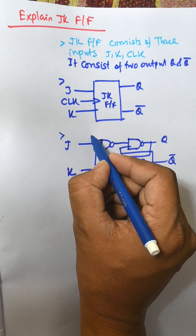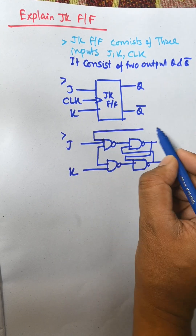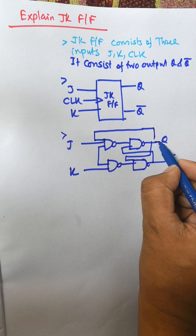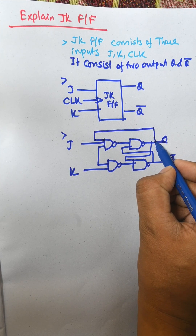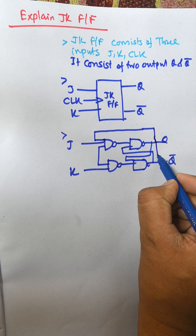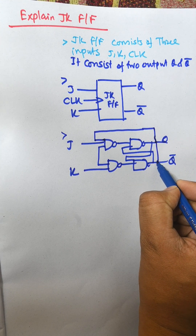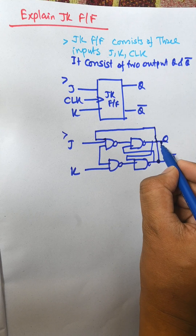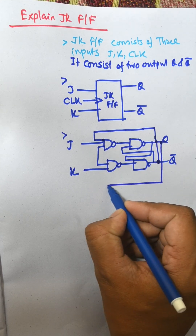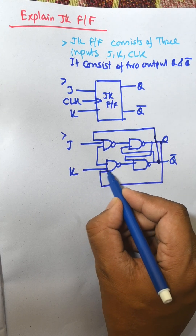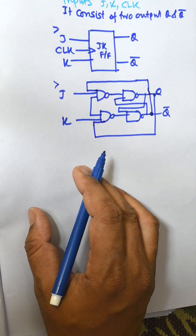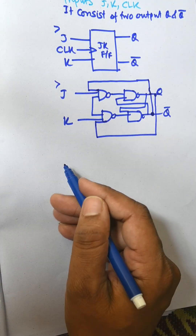Now another input: this is feedback from Q-bar, and Q is fed back to K. So this is the circuit diagram of the JK flip-flop.